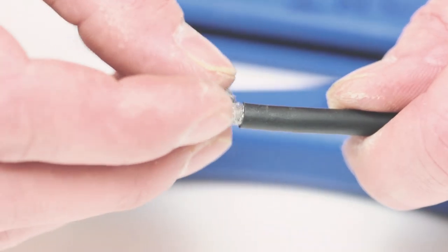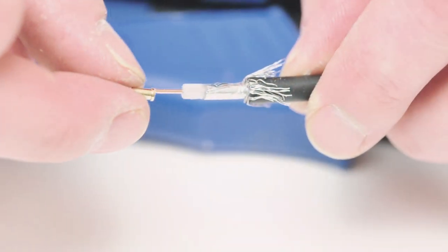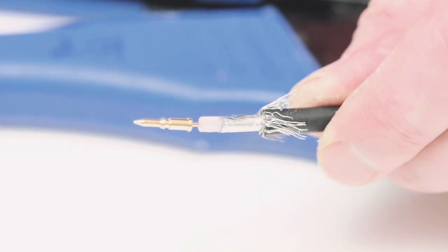Then take your fingers and fold the braided shield on top of the jacket. Slide the ferrule over the braid and the jacket. Insert the center pin onto the center conductor.